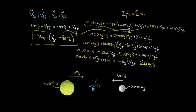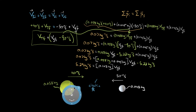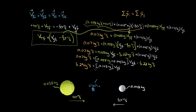Adding 5.22 to both sides gives 5.29 kilogram meters per second on the left. Adding 0.058 and 0.045 gives 0.103 kilograms times VG final. Dividing both sides by 0.103, I get 51.36 meters per second on the left-hand side, and that equals the final velocity of the golf ball. We found one of the final velocities.